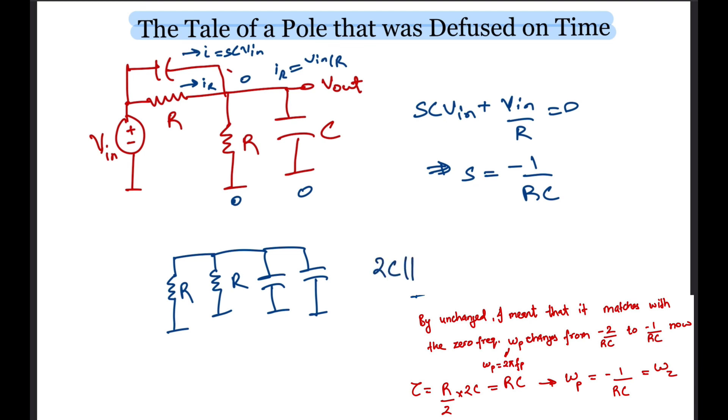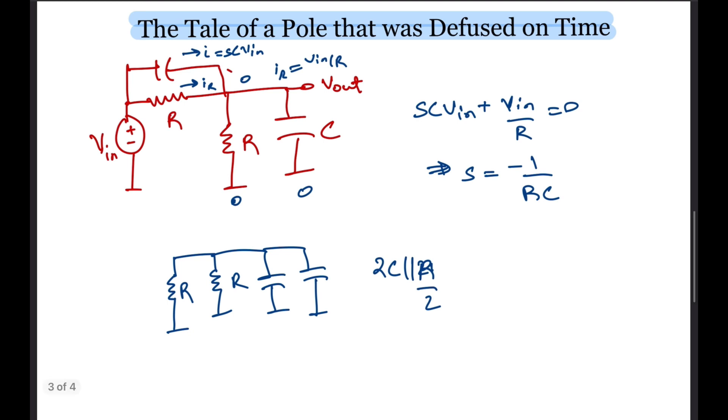On further analysis, we can say that at DC, the caps are open and the output is simply R upon 2R times Vin, which is Vin by 2. Whereas, for a high frequency, meaning at the time of switching, the caps will be shorted and would essentially act like a capacitive divider, resulting in Vout equal to C over 2C times Vin, which is also Vin by 2. Thus, we get an all-pass response.